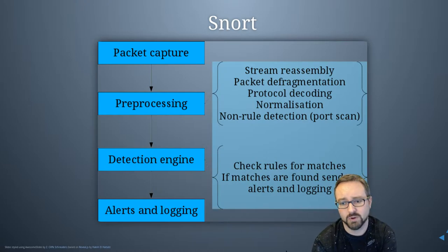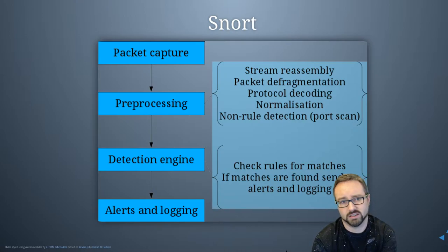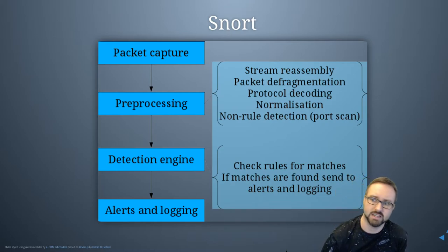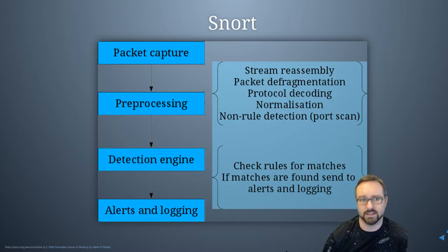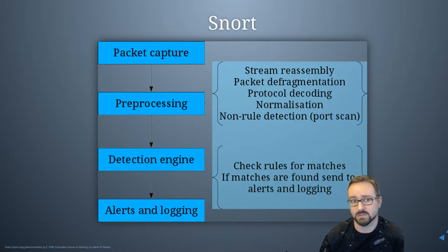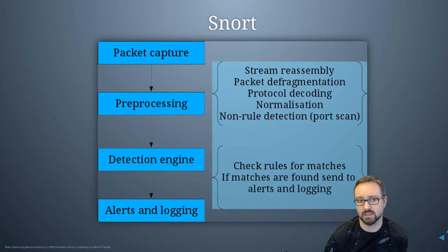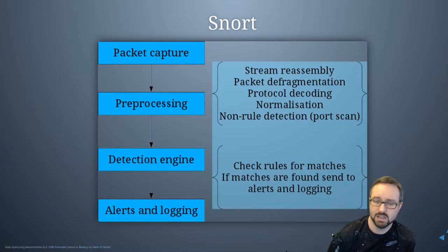SNORT's processing looks like this: SNORT does packet capture and then preprocessing. It does stream reassembly and packet defragmentation — collecting all the packets and generating a view of what's inside them, not just looking at individual packets. Protocol decoding is also done, so for example if it's HTTP traffic that happens to be zipped, it can uncompress before applying rules.